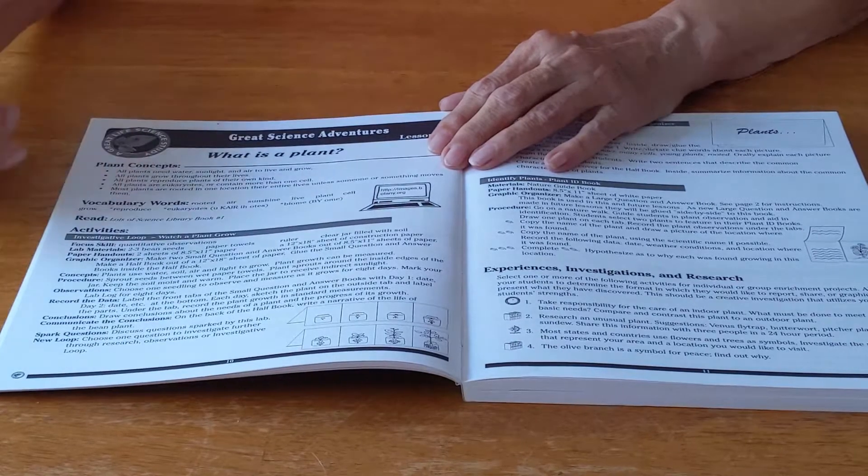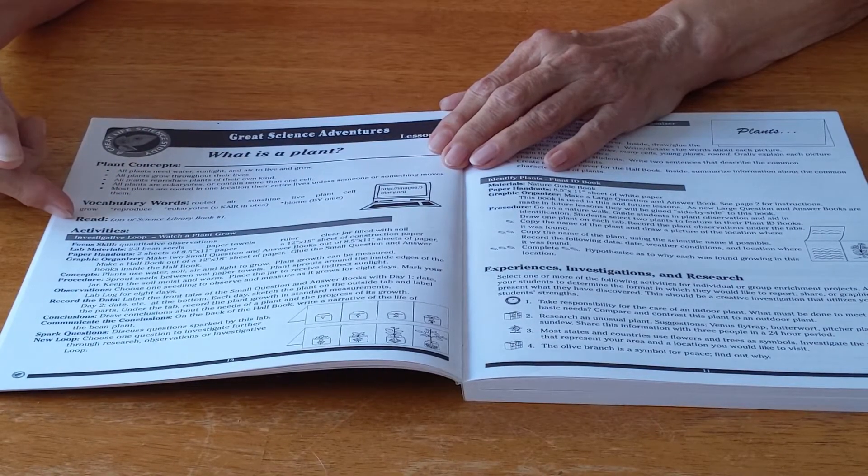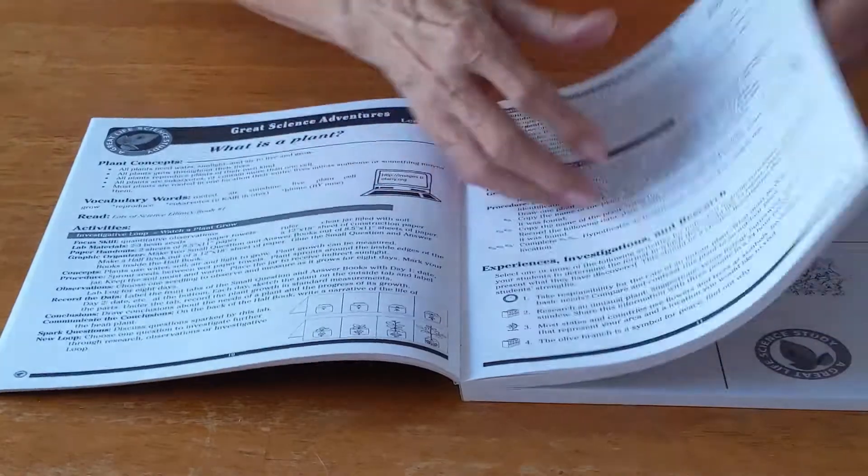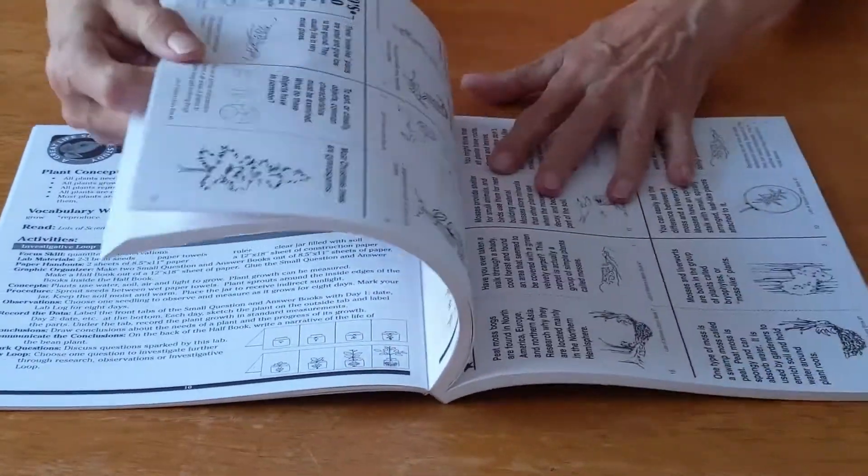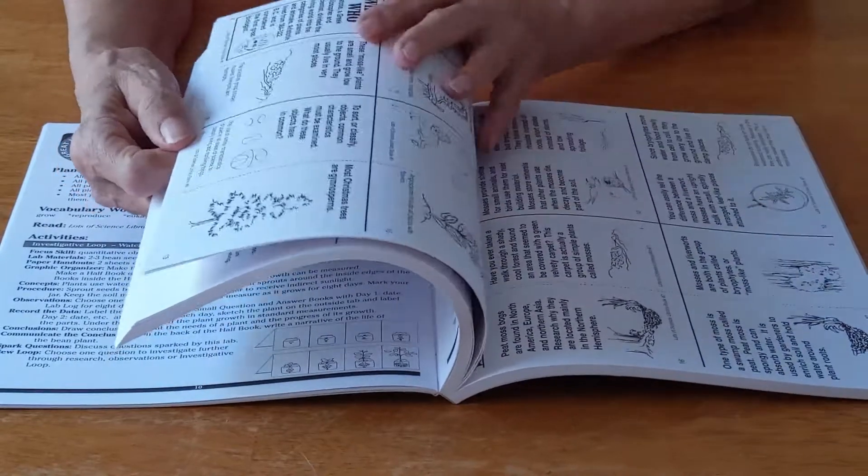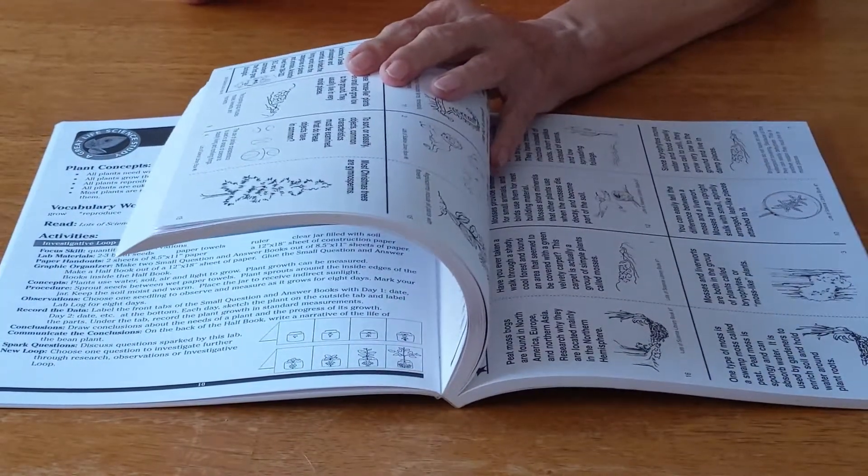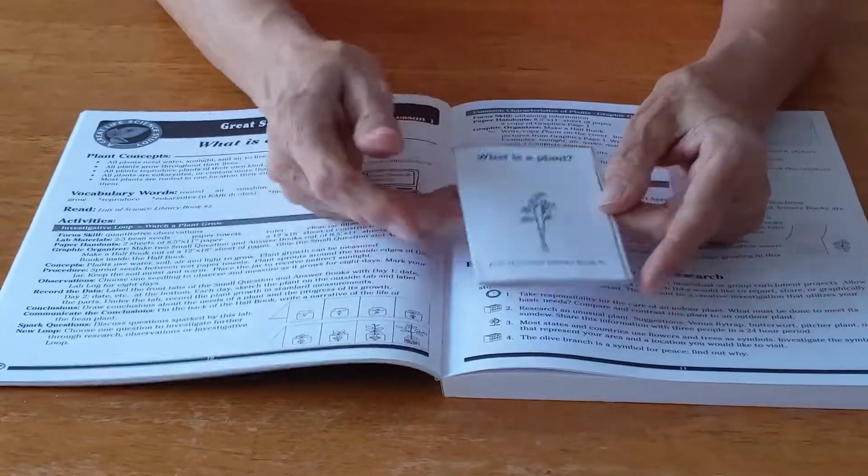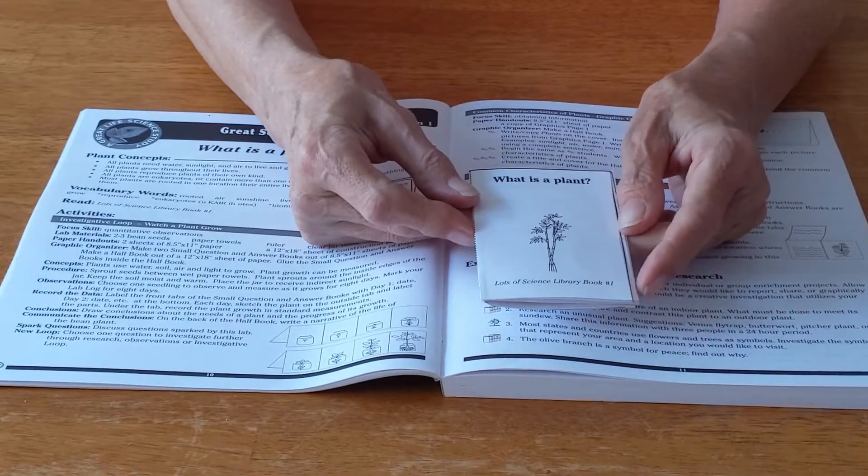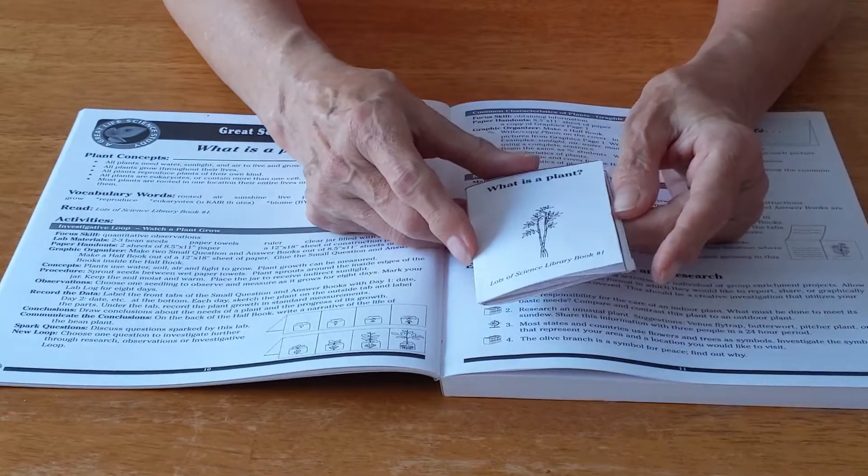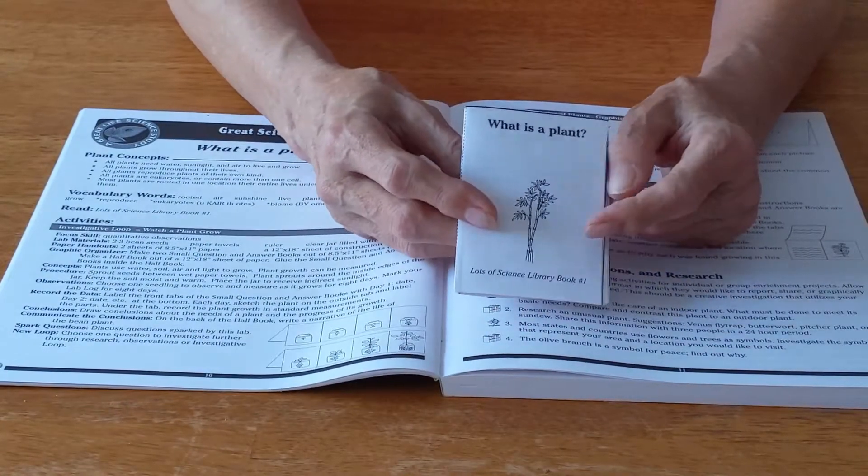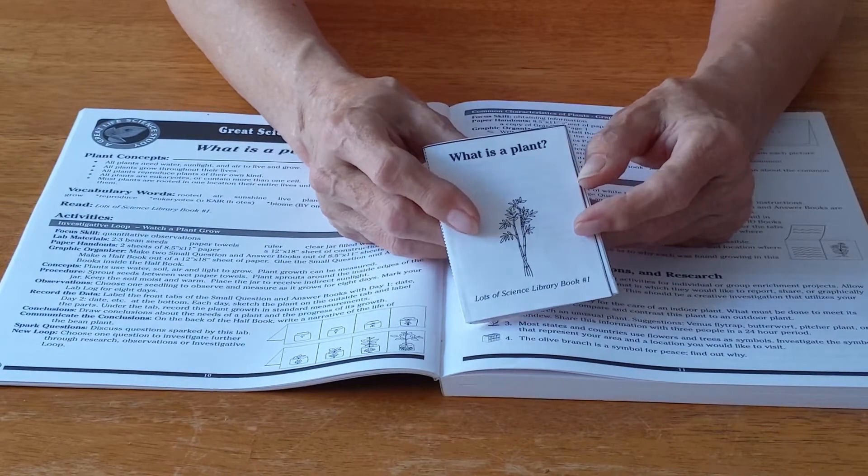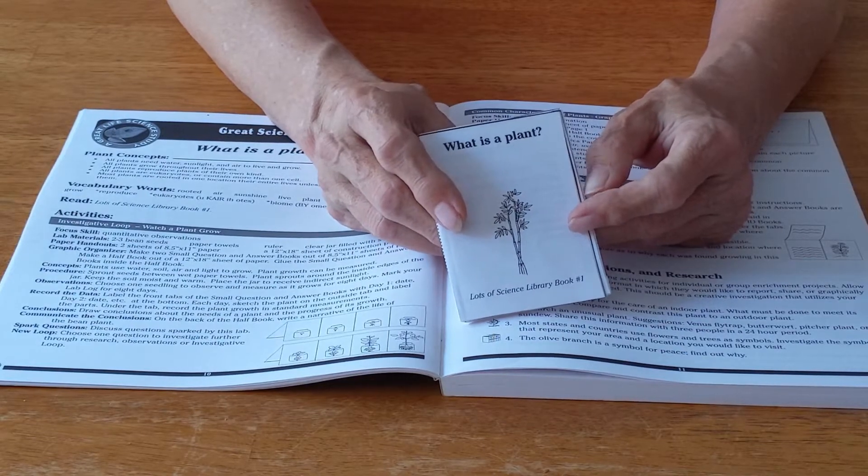The next section in the lesson is to read lots of science library book number one. We have these small books for each of the lessons. We're going to look at the book for lesson one. It's entitled What is a Plant? You have permission to photocopy these books so that each one of your students may have it.